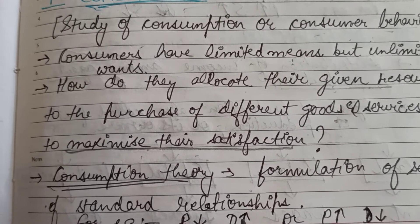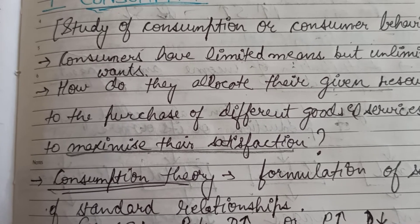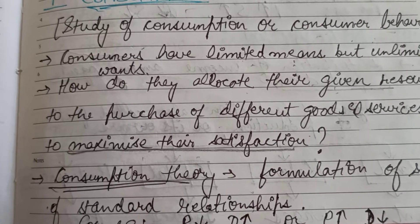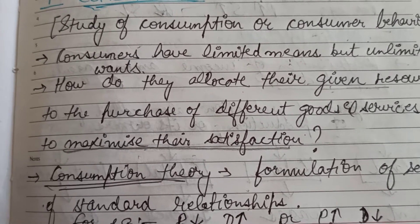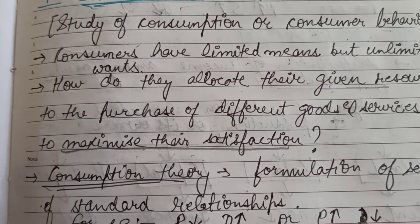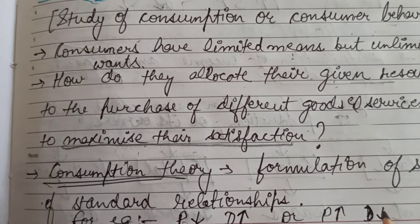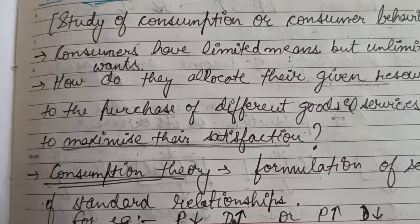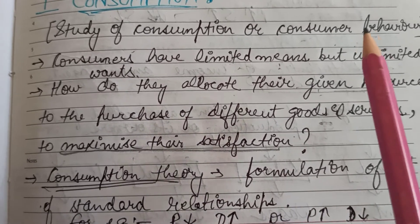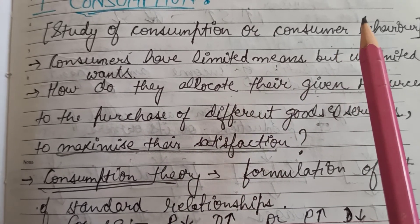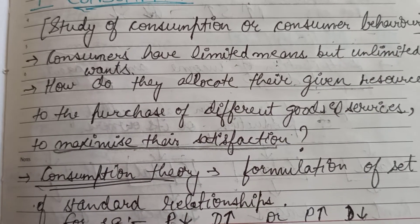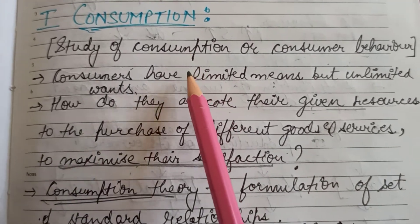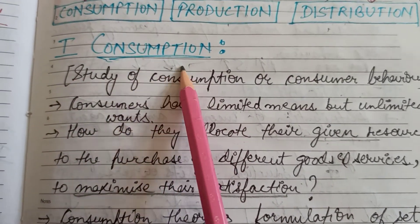We as consumers do this — if the price of a certain commodity decreases, we make more demand for that commodity. Or when prices increase, the demand for that commodity decreases, which shows an inverse relationship between price and demand. This is what we come to know by studying consumer behavior — how a consumer behaves on the increase or decrease in prices of a certain commodity. This was all about the first component, that is consumption.